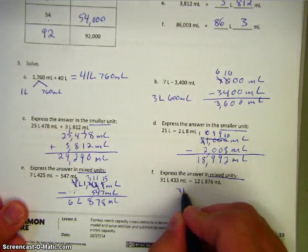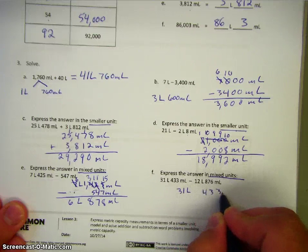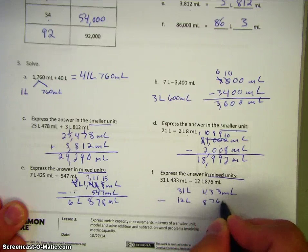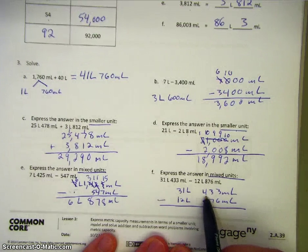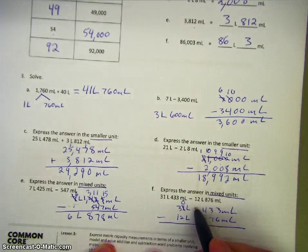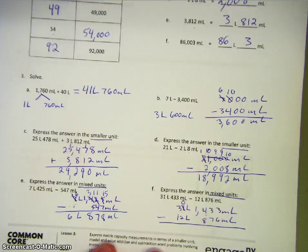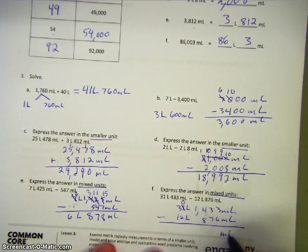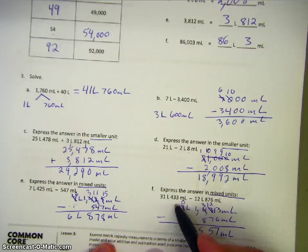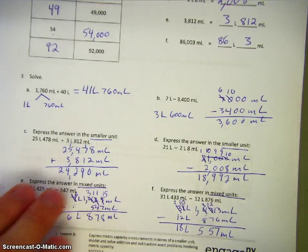Same thing with the next one. We have thirty-one liters, four hundred thirty-three milliliters, minus twelve liters, eight hundred seventy-six milliliters. Again we don't have enough milliliters to subtract, so we decompose one liter into one thousand milliliters. After decomposing and subtracting — thirteen minus eight gives us five, and thirty minus twelve — our final answer is eighteen liters, five hundred fifty-seven milliliters.